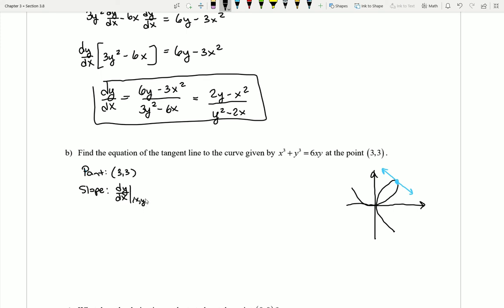And my slope can be easily found by going to dy/dx where x and y are, I'm going to plug in 3 and 3. So that would be 2 times 3 minus 3 squared over 3 squared minus 2 times 3. So let's see, I'm going to get 6 minus 9 on top, I'm going to get 9 minus 6 on bottom. And so it looks like I end up with a total slope of negative 1.